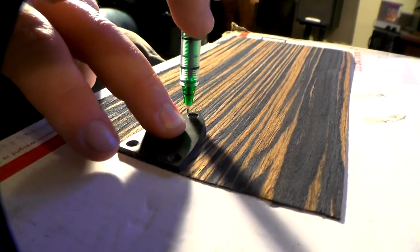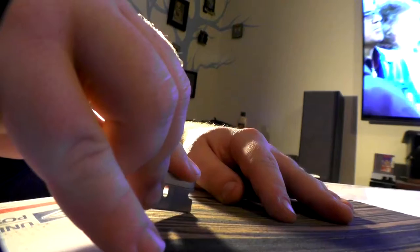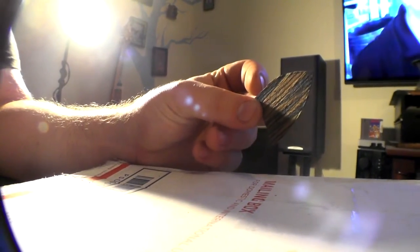For our truss rod cover, we're going to go ahead and trace around on a piece of zebra wood, I believe. This is just a veneer. Cut that out with a razor blade since it's thin enough that we're able to do that. There's the finished cut.